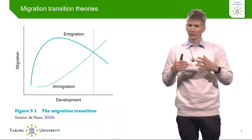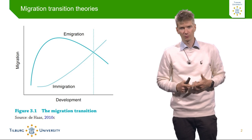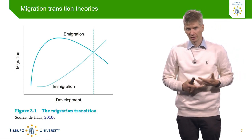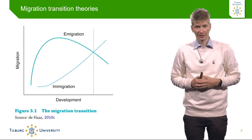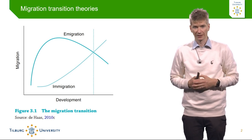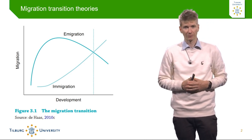Hi everyone and welcome to this knowledge clip on theories of international migration. This time I will be talking about migration transition theories, which have become much more popular over the past years to explain why international migration exists. This is a much more contemporary migration theory compared to classical theories like the neoclassical theory, the push-pull model, the new economics of migration, labour market segmentation approaches, or structuralist approaches which you might have already watched in the other knowledge clips. If you did not do so, please do so because this is relevant background material.